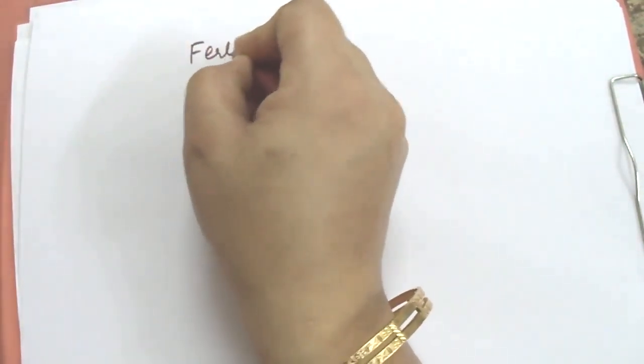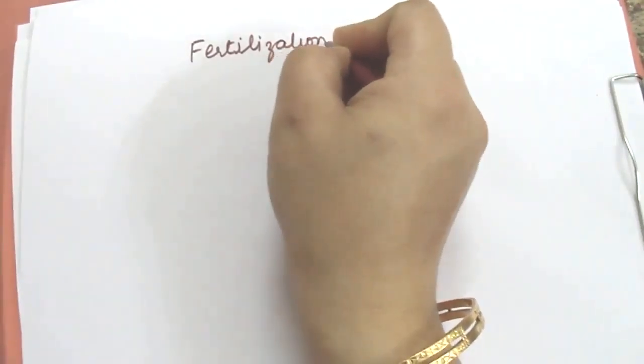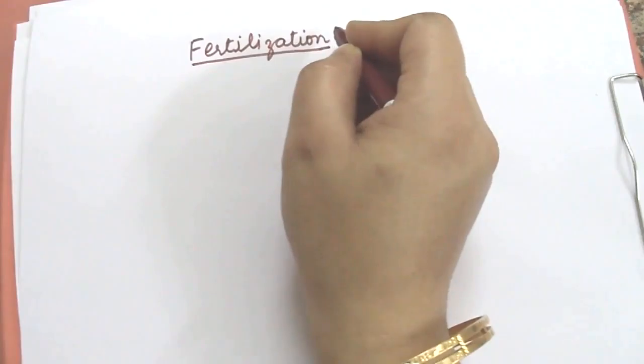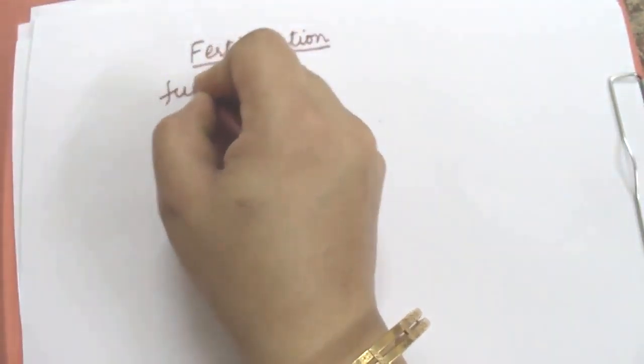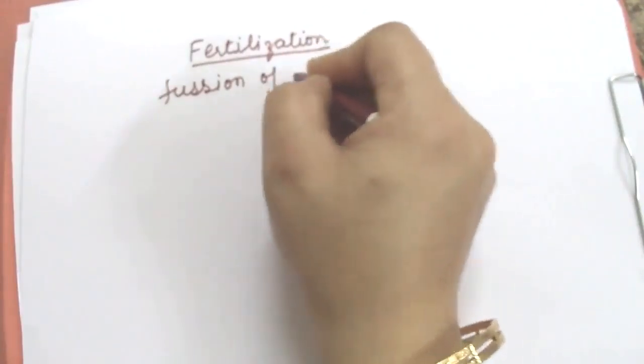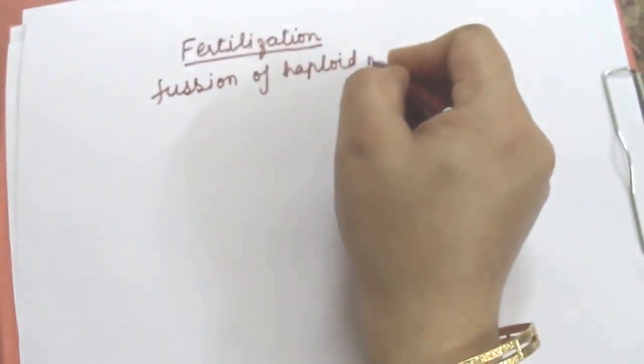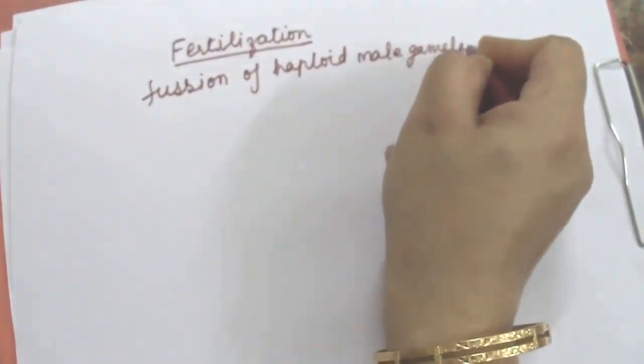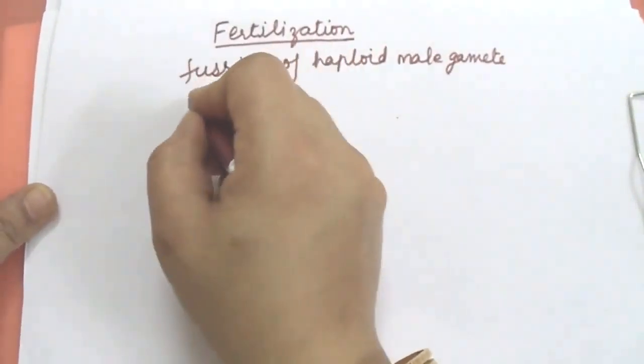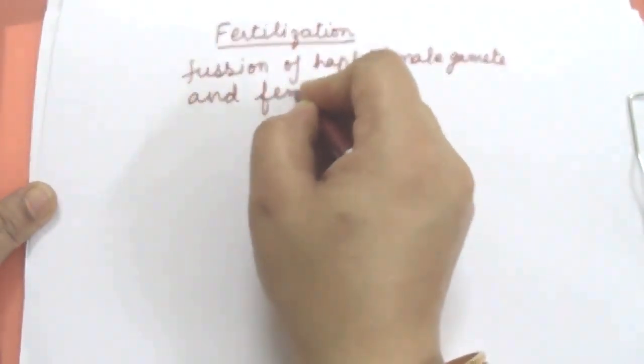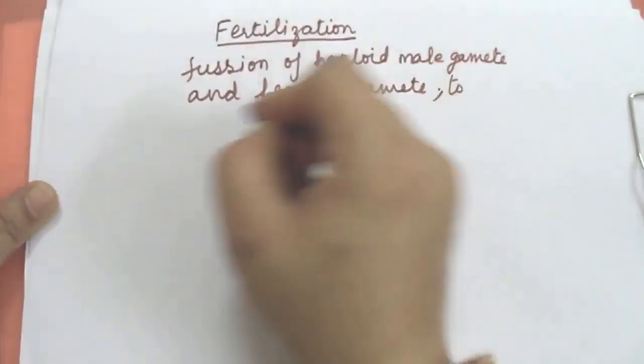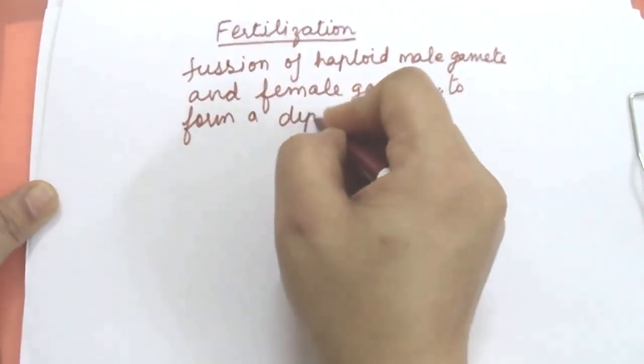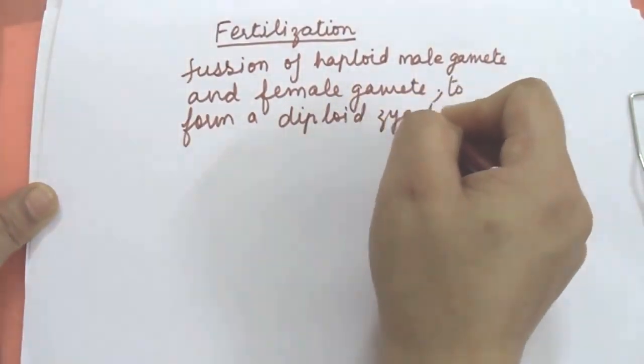Today we will discuss about the fertilization. What is fertilization? You all know students, fertilization is the fusion of haploid male gamete and haploid female gamete to form a diploid zygote. This is the definition of fertilization.